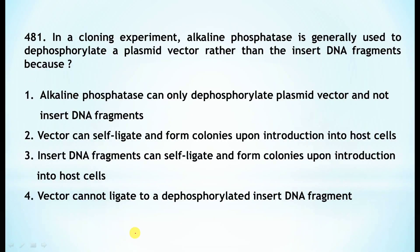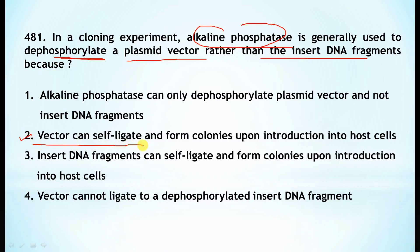Today we start with question number 481. In a cloning experiment, alkaline phosphatase is generally used to dephosphorylate a plasmid vector rather than the insert DNA fragments. The correct option is: because the vector can self-ligate and form colonies upon introduction into the host cells. This is the reason why the plasmid vector, not the insert DNA fragments, is dephosphorylated.